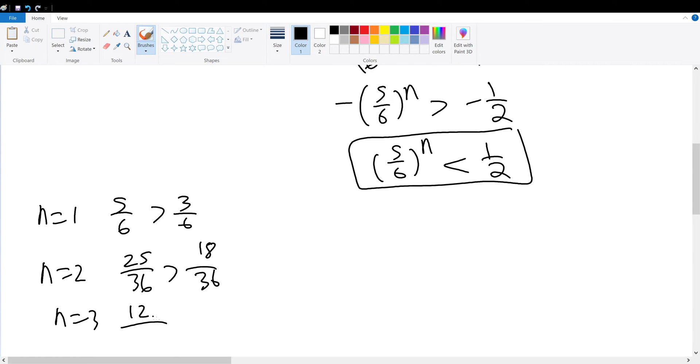Let's consider n=3. When n=3, that's 125/216, and half of that is 108. This is still greater.